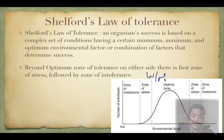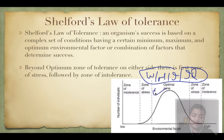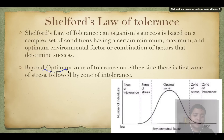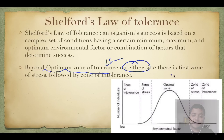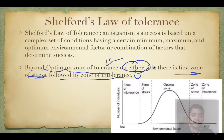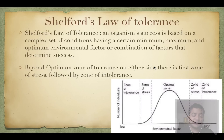This curve holds true for a large sample of population for any variable - weight, height, income, intelligence. Beyond the optimum zone of tolerance on either side, there is first a zone of stress followed by a zone of intolerance. That was Shelford's Law of Tolerance.